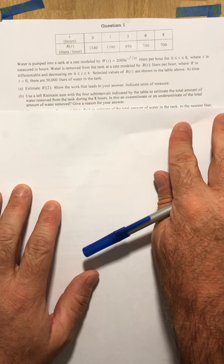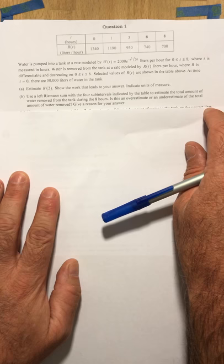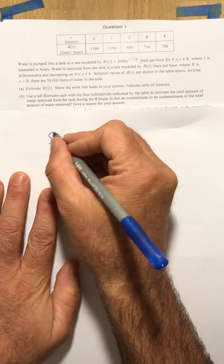All right, part B asks us to do a left Riemann sum to estimate the total amount of water removed from the tank. So I'm estimating the integral from 0 to 8 of R of T.